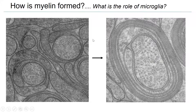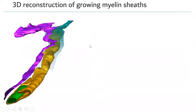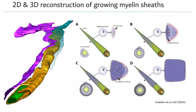We try to understand how we get from an early pattern to a multi-lamellar structure. We did 3D reconstructions of the growing myelin sheath at different time points of development, and by this we established a model of how myelin is generated by the movement of the membrane around the axons. I won't go into details of this work.